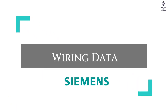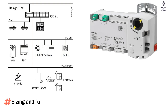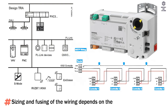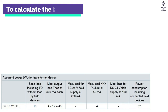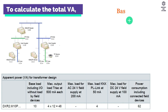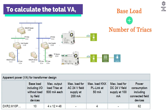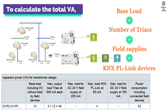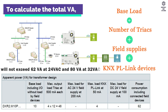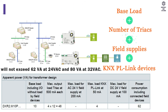Wiring data: sizing and fusing of the wiring depends on the connected load. To calculate the total VA, add the base load plus the number of TRIACs plus field supplies plus KNX PL link devices — will not exceed 62 VA at 24V AC and 80 VA at 32V AC.